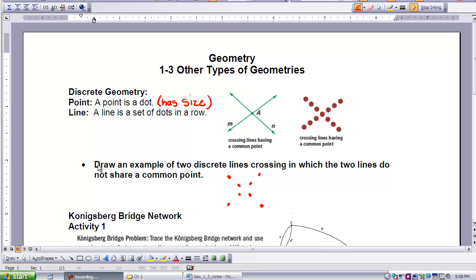I wanted to have you draw an example of two discrete lines crossing in which the two lines do not share a common point. As you can see here, the points are evenly spaced and the two lines intersect, but they don't share a point in common. So this is possible within discrete geometry.